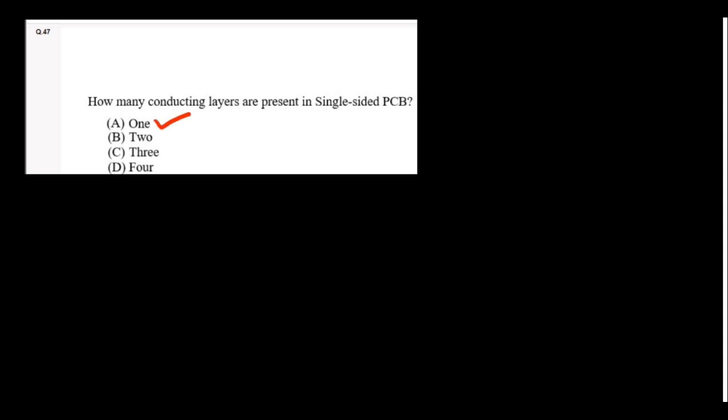How many conducting layers are present in a single-sided PCB? Only one layer, because copper is present either on the top or bottom side only.